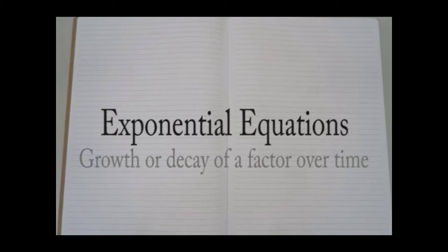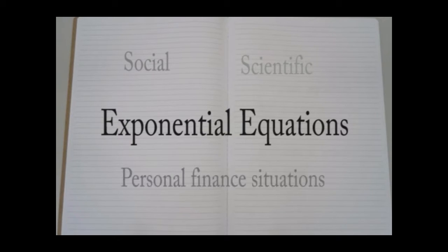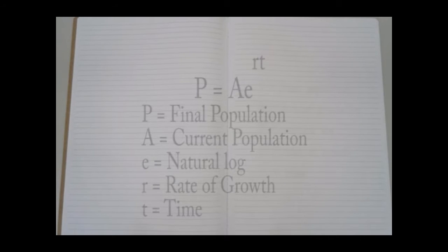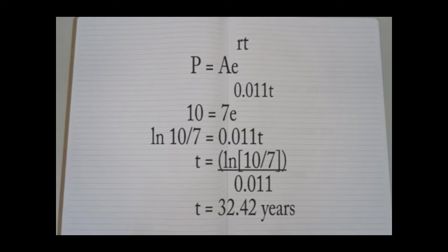Exponential equations describe the growth or decay of a factor over time and are used to model social, scientific, or personal finance situations such as radioactive decay, interest rates, or indeed population growth. By using an exponential equation, we are able to calculate the time before our population reaches 10 billion, and this can be achieved by using logs to rearrange our population growth exponential equation and substituting in the values we know. If we substitute 10 billion into our exponential equation as p, 7 billion into the equation as a, and 0.011 as r,